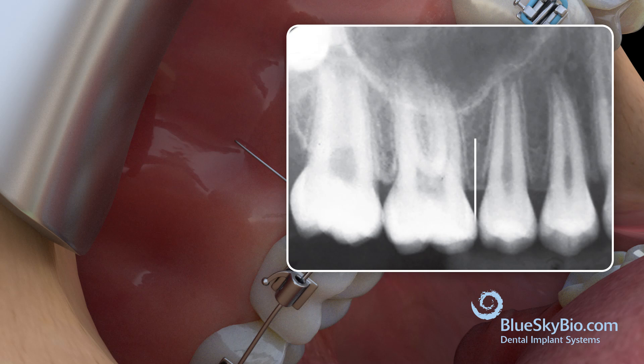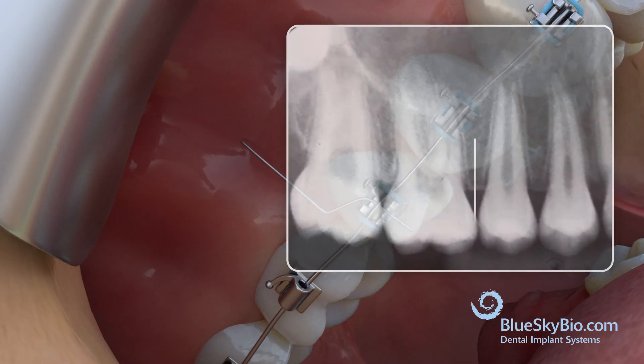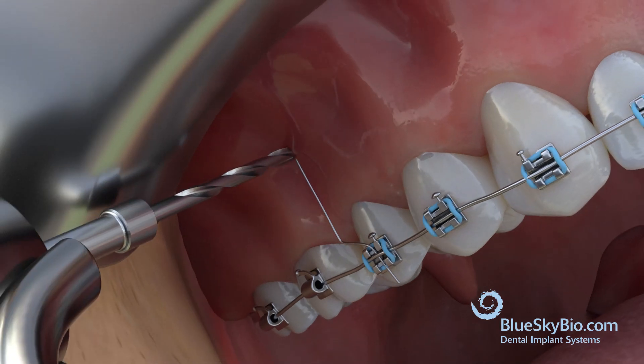Next, take an x-ray to get a clear view of the tooth location and roots. Use a drill to make an initial hole in the cortical bone.